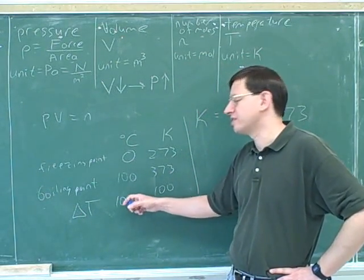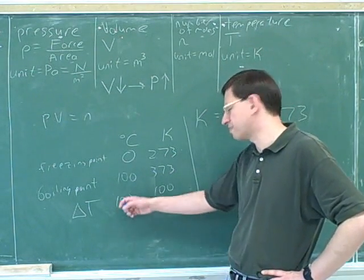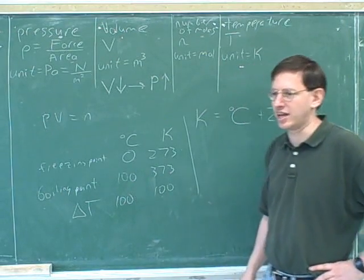Delta T, the change in temperature, is the same in Celsius and Kelvin. So you can save yourself a step and give yourself less chances to make an arithmetic mistake by not translating the temperatures in that case.